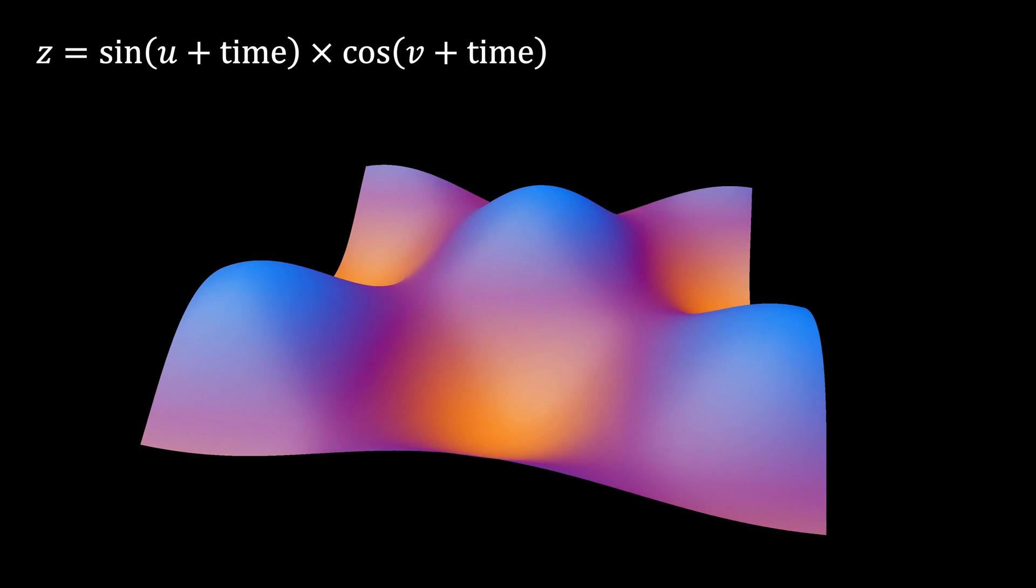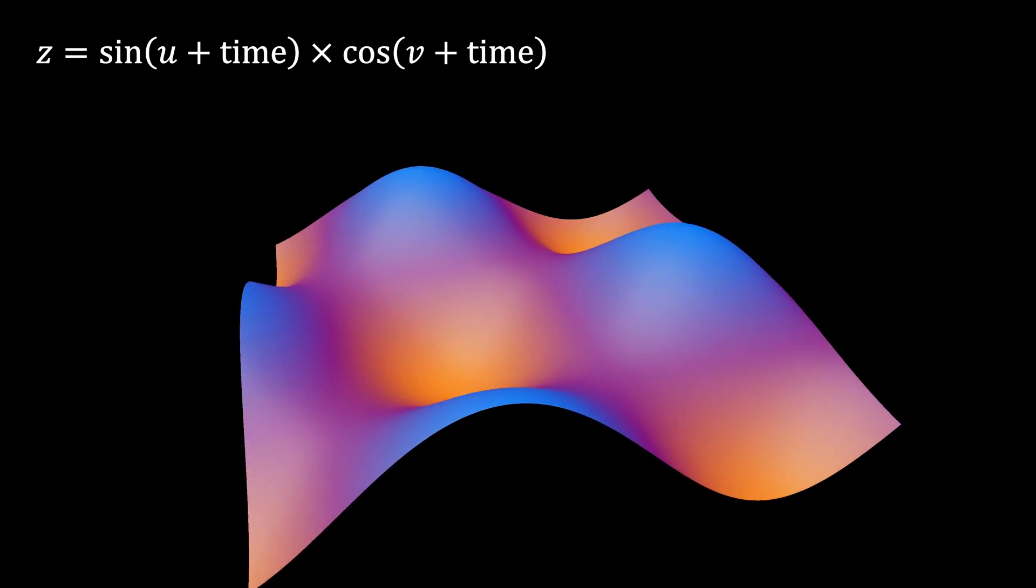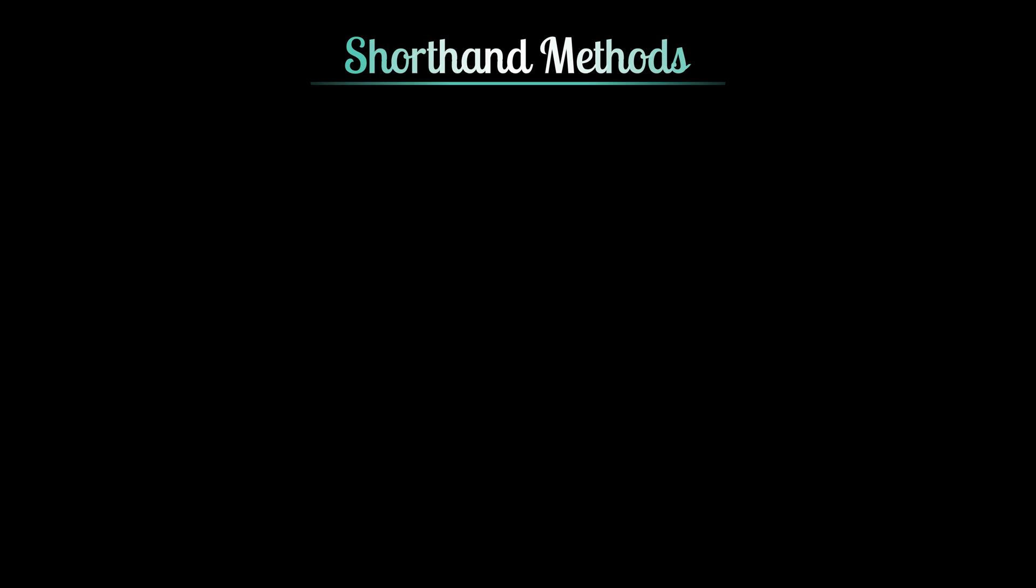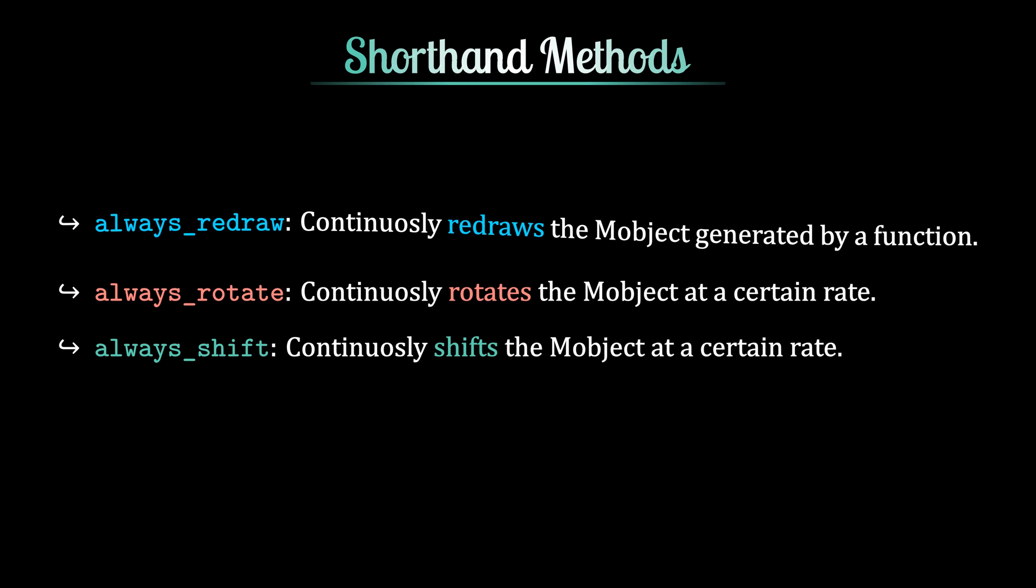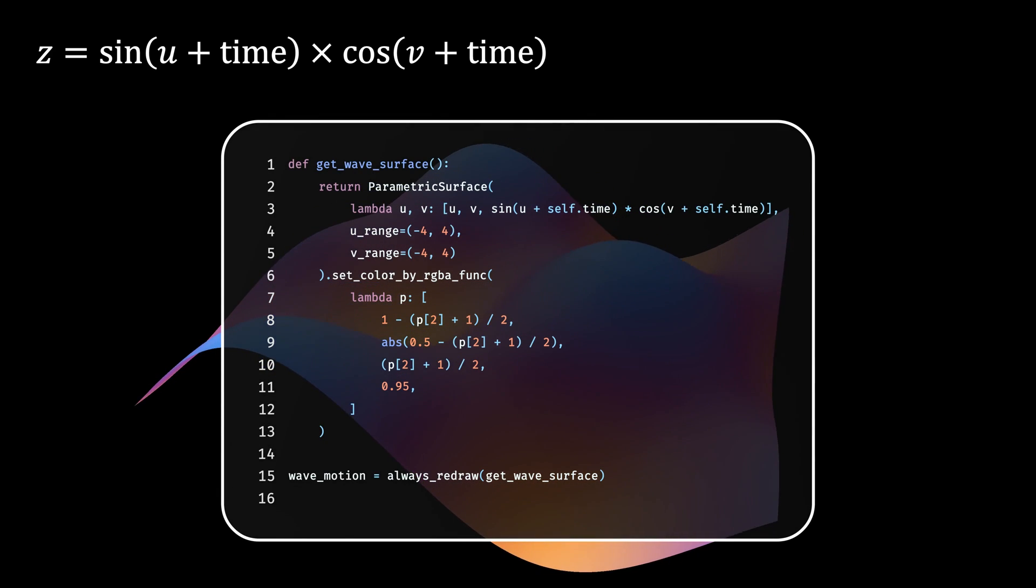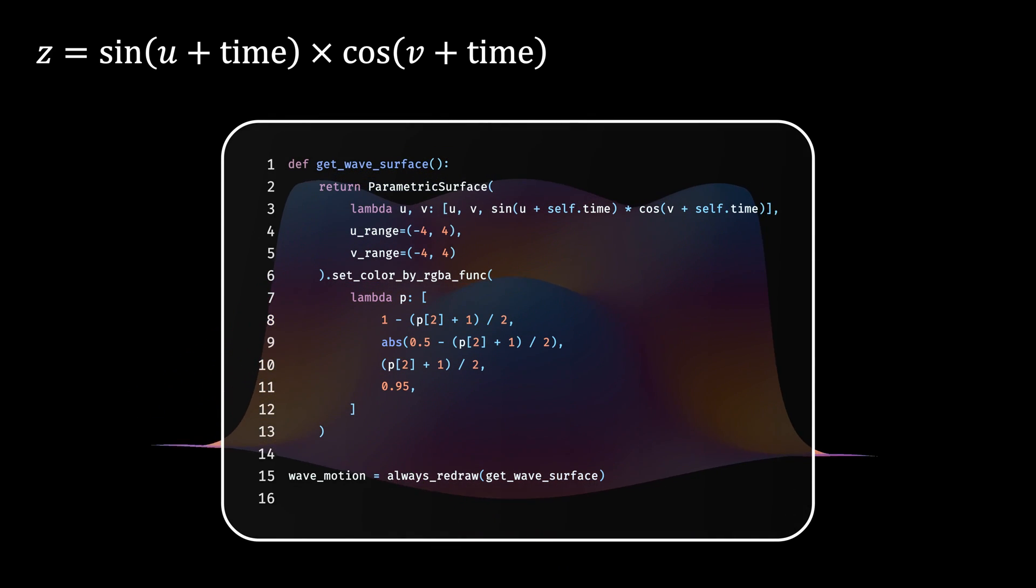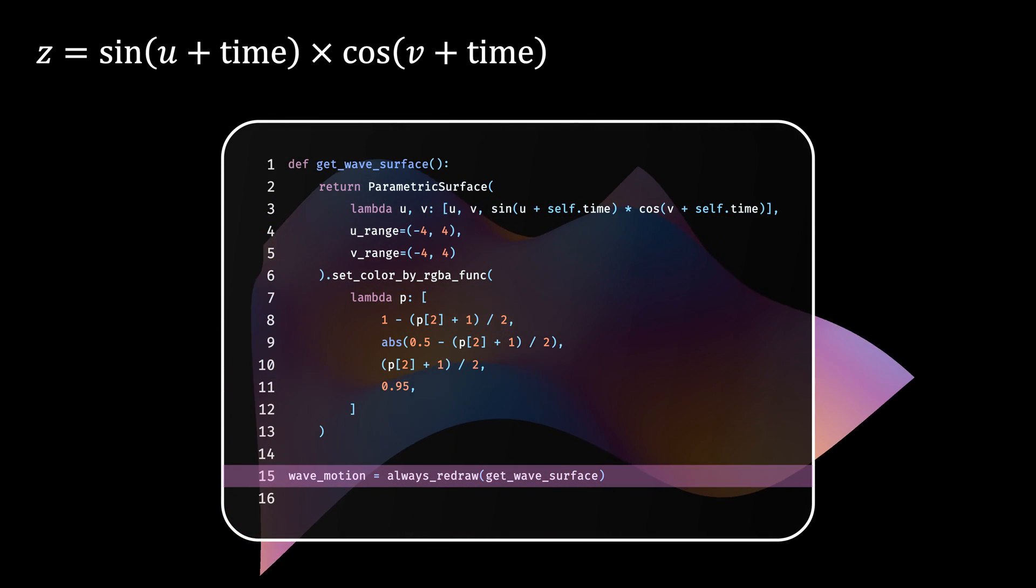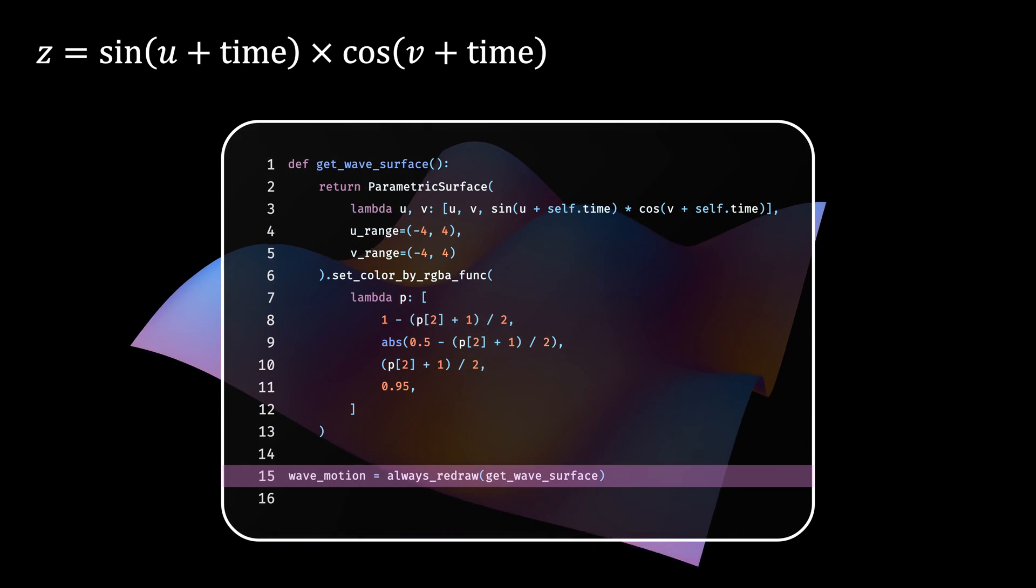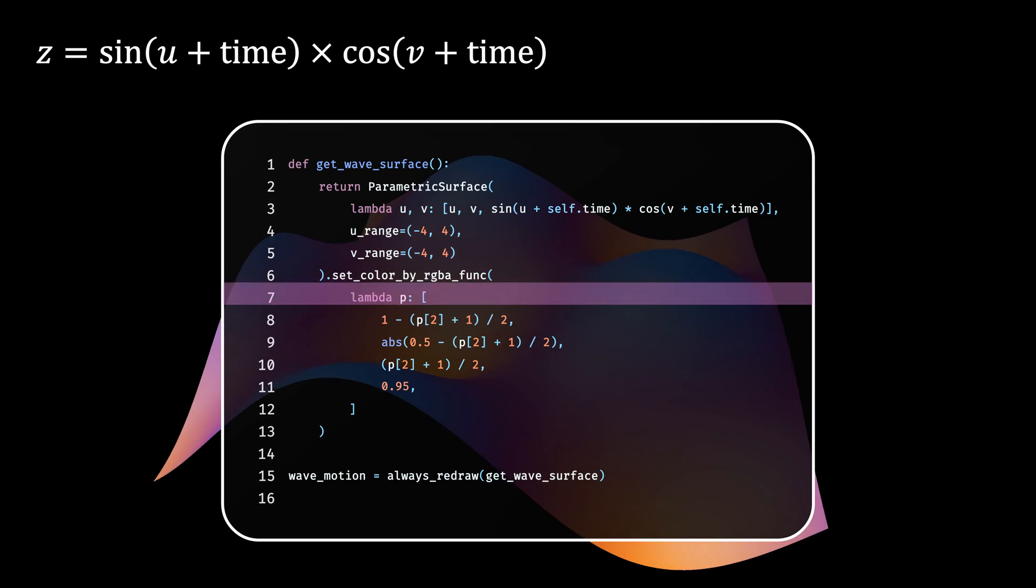We can achieve this dynamism by drawing this wave continuously at every frame. Well, for these type of functionalities, Manim also provides short-hand methods like always redraw, always rotate and always shift. You see, line 15 calls the get wave surface function at every frame, which redraws the wave sheet continuously. And line 3 depicts how the wave sheet is changing with respect to the scene time.